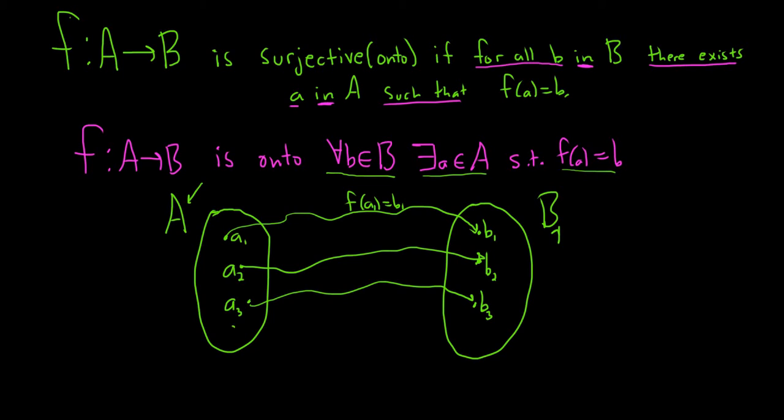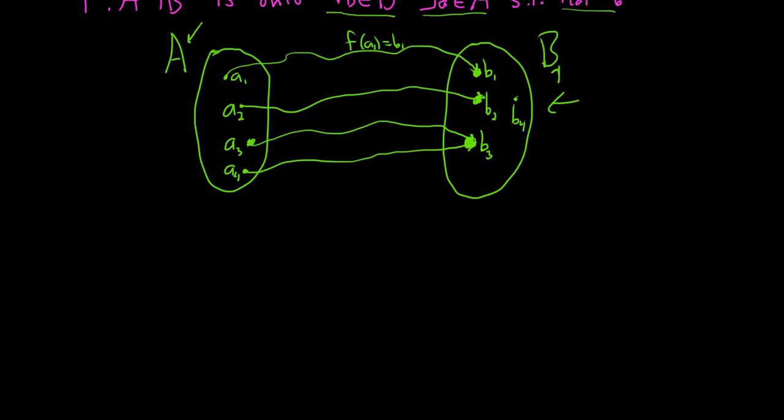You could have something like this. You could have another element here, and it could also go to this element here. So you can have something here in the codomain getting hit more than once by elements from the domain. That's fine. It's still surjective. The point of surjection is that everything here gets hit. So everything gets hit. You can't have something like that. That would fail.